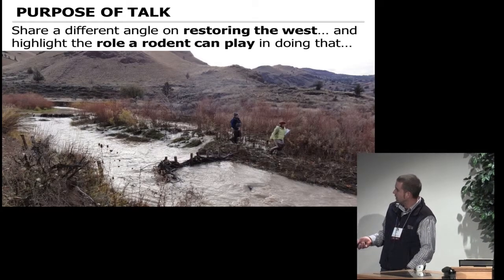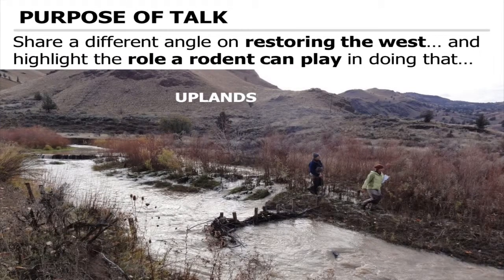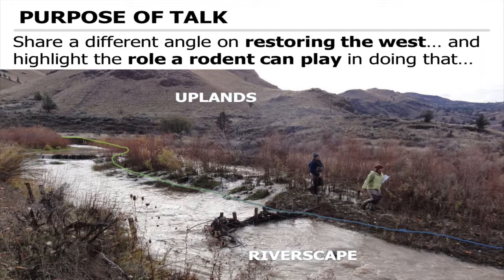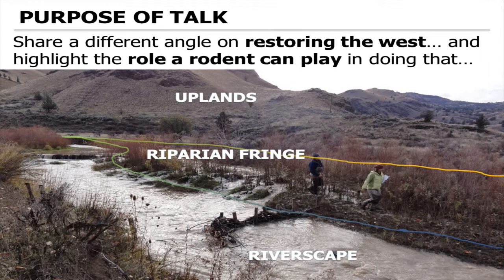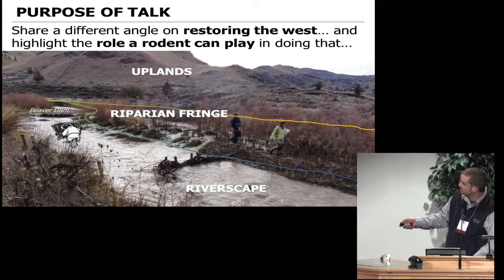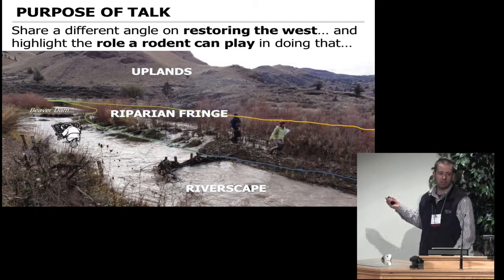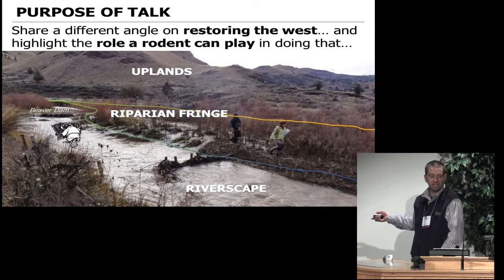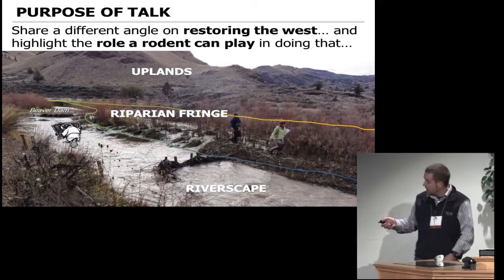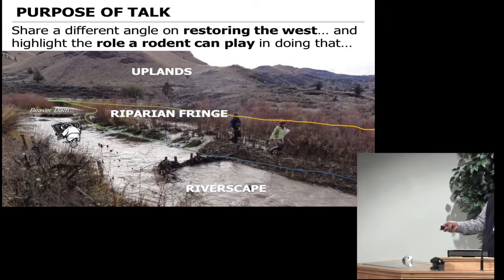Here's a typical incised stream in the West, and here are uplands where some of you work. We draw these artificial boundaries because then we can have a Department of Watershed Sciences and a Department of Wildlife and Resources. But maybe we draw it a little differently - we have a riparian fringe zone, and is that in my turf or your turf? Beaver don't really care. They build their dams and blur these boundaries, and they venture up further on the hillslopes than silly fluvial geomorphologists like myself.